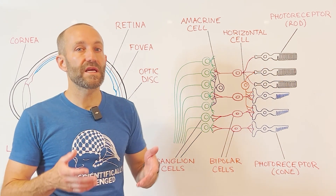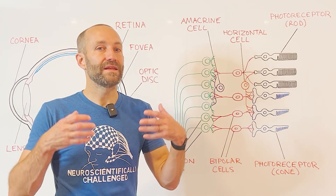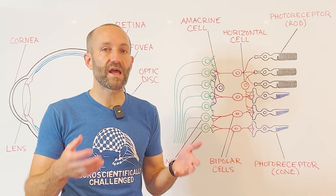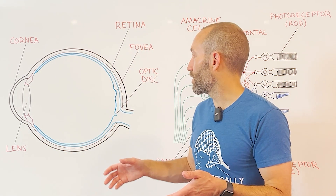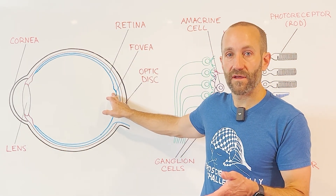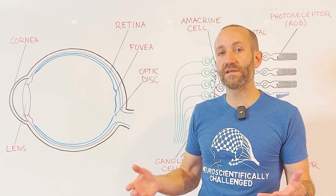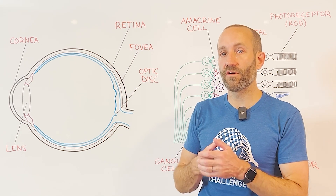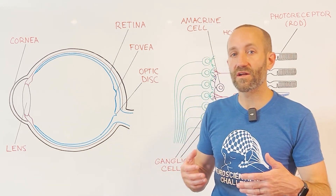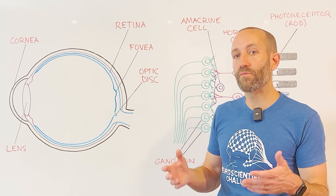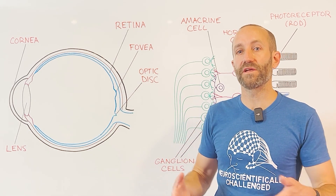Surprisingly, even though cones mediate perception in typical light situations, we have far more rods than cones in the retina — somewhere around 90 million rods and only about 4.5 million cones. However, there is one part of the retina called the fovea where there are many more cones than rods. In fact, at the very center of the fovea, called the fovella, there are no rods at all. Because of its high cone content, the fovea has the capacity for our highest acuity vision, causing us to unconsciously move our eyes so that important visual information lands on our fovea.